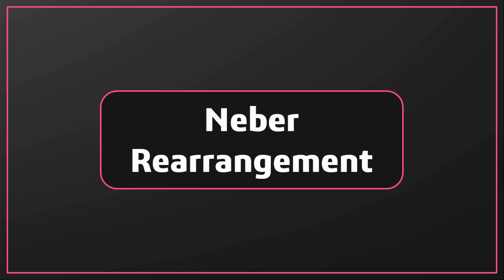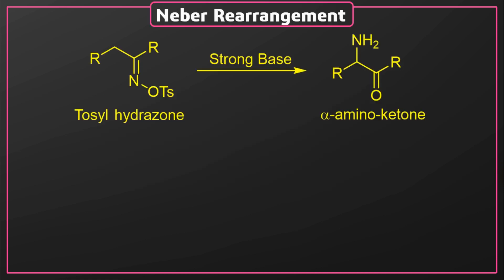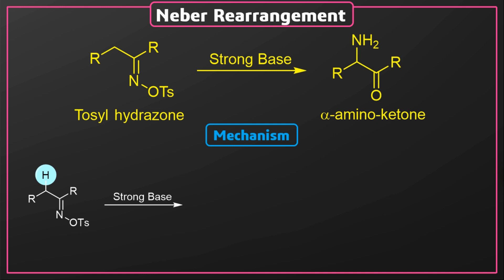Today we are going to discuss the Neber rearrangement. The Neber rearrangement is the rearrangement of hydrazones. In this rearrangement, tosyl hydrazones are converted into alpha amino ketones in the presence of a strong base. The driving force for this rearrangement is to make a more stable rearranged product. Now we are going to discuss the mechanism of this rearrangement.